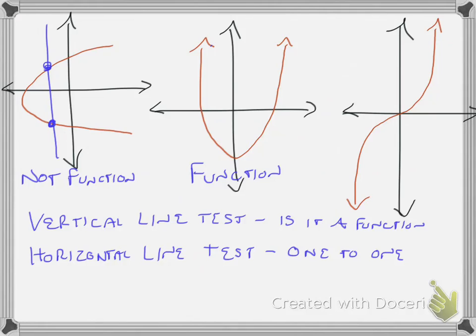So for this second one, it is a function, but if I do the vertical line test, it hits it twice, which means that it's not one-to-one.